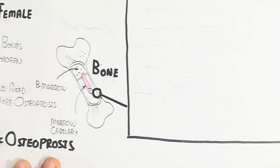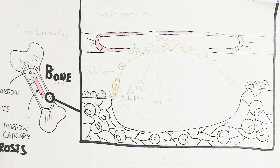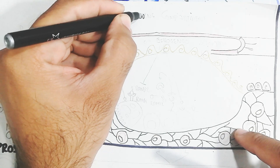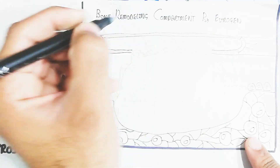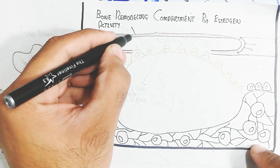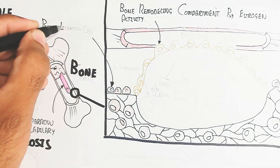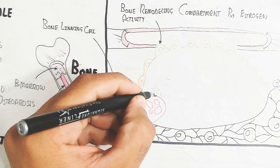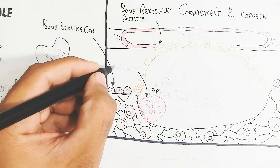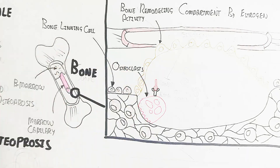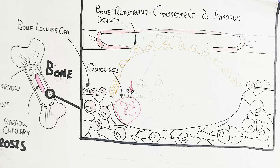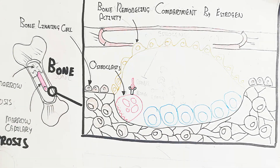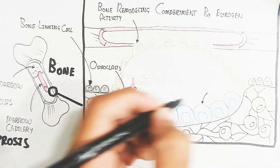In bone remodeling, there is a remodeling compartment consisting of bone marrow, marrow capillaries, compact bone, and bone lining cells. RANKL binds to the RANK receptor to trigger osteoclast activity. Osteoclast formation is also stimulated by macrophage colony-stimulating factor. RANKL binding triggers bone resorption.